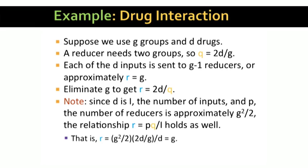Actually, it's not g, it's g minus 1, but p isn't really g squared over 2. It's really g choose 2, or g times g minus 1 over 2. The approximations even out.